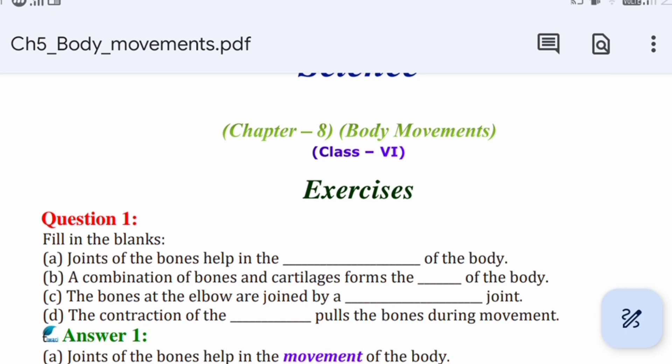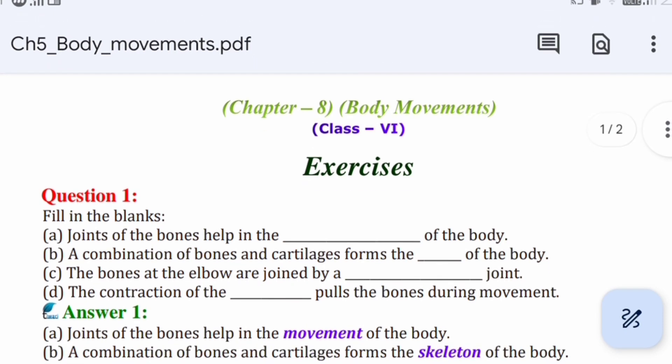(b) A combination of bones and cartilages forms the blank of the body. Cartilage and bones form the skeleton of the body. Next question: The bones at the elbow are joined by a blank joint.